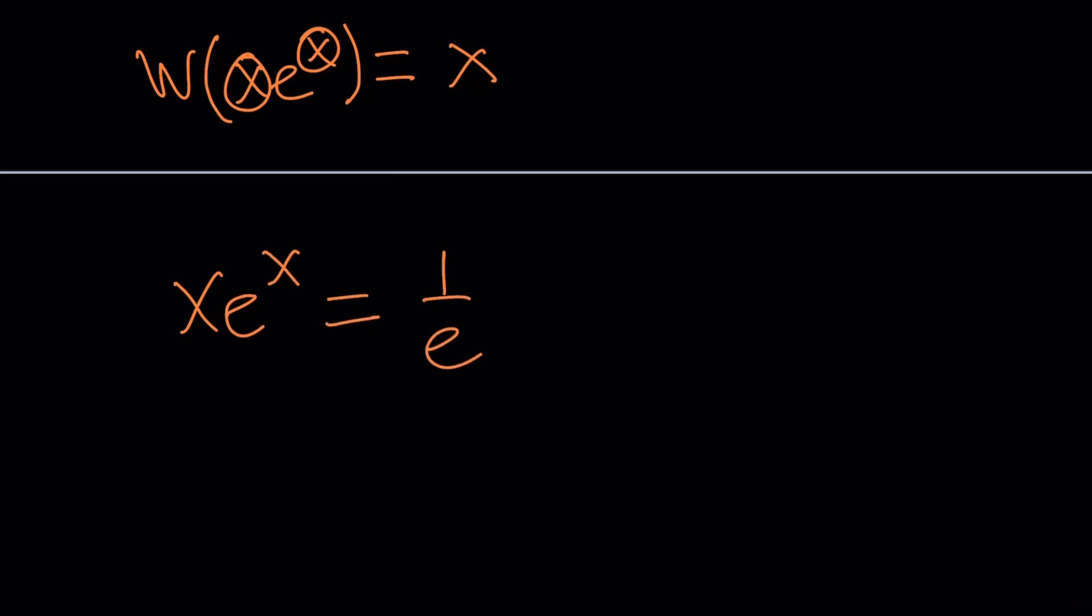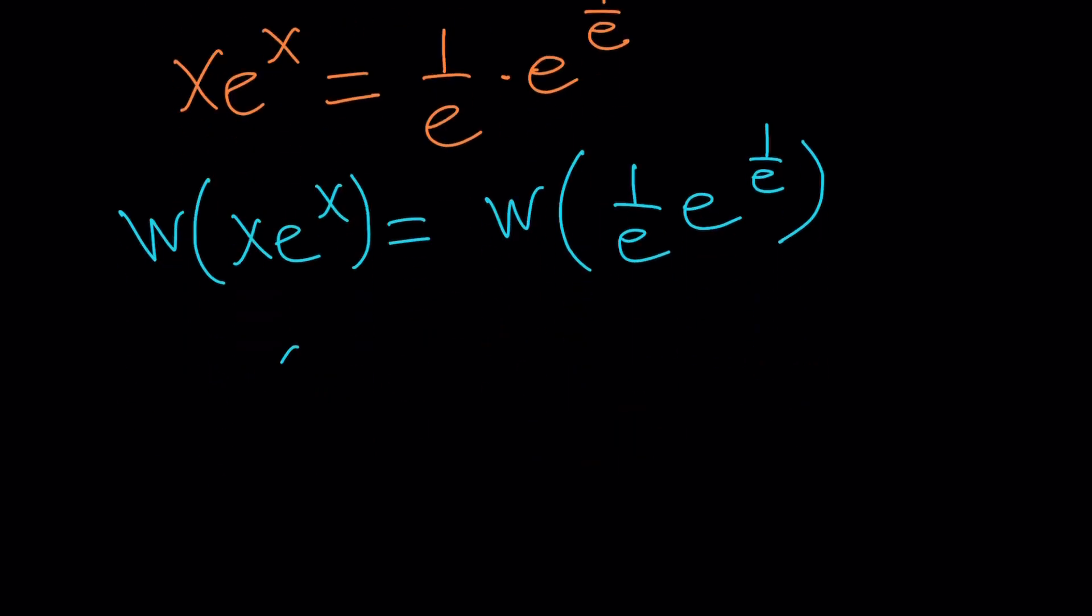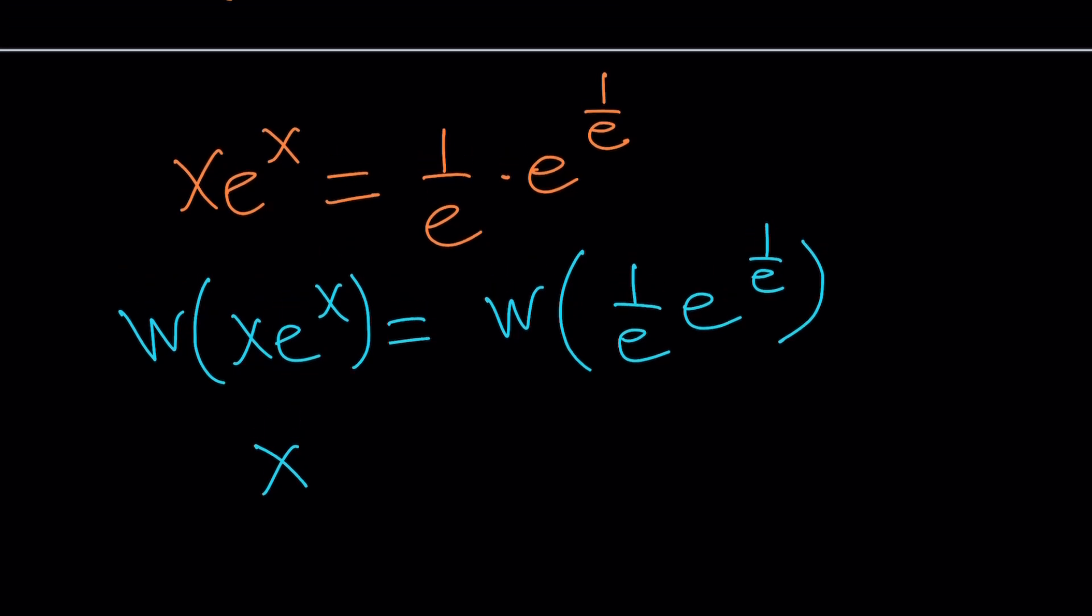So, let's go ahead and go back to our expression one more time. x times e to the x equals (1 over e) times e to the power (1 over e). Now, I'm going to go ahead and W both sides. And when I W both sides, I'm going to get the following. This is going to give me x. Now, on the right-hand side, it may not be very clear. So, if you want to replace 1 over e with c, so that you can write it as W of (c times e to the c). And hopefully, you see that that is equal to c. Hopefully, you see what I see. But c is 1 over e, so x becomes 1 over e from here.